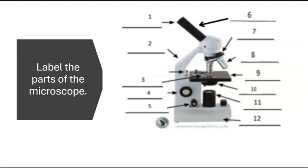We have here the different parts of the microscope. This is one of your activities in which you are going to label the different parts of the microscope. Starting with number 1, it's the eyepiece. Number 2, this is the arm. Number 3, we have stage clips.